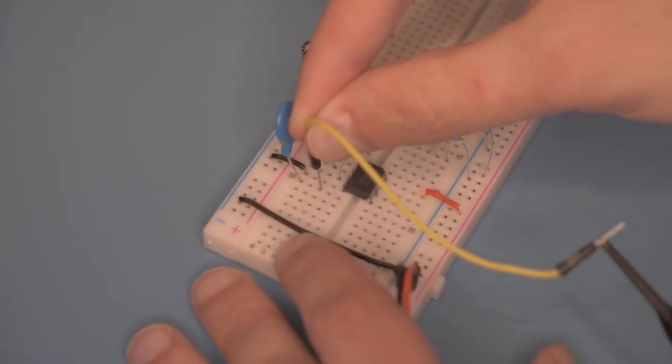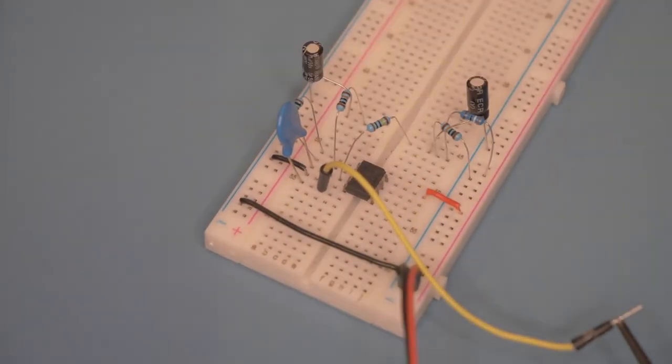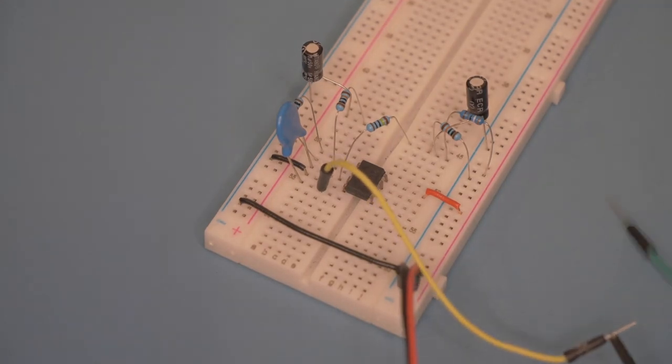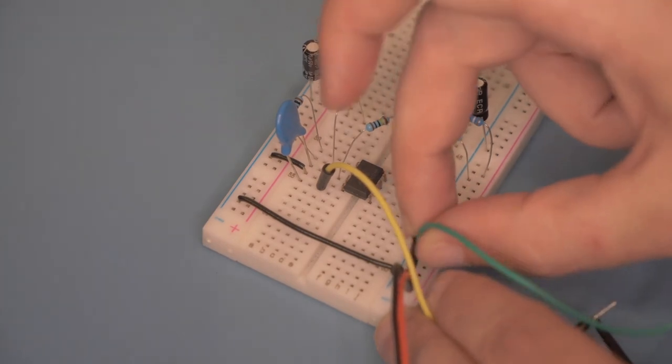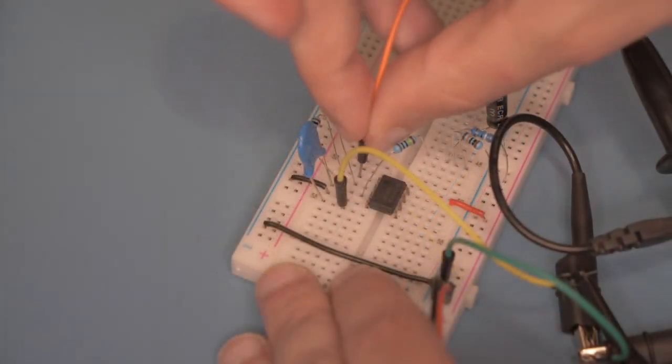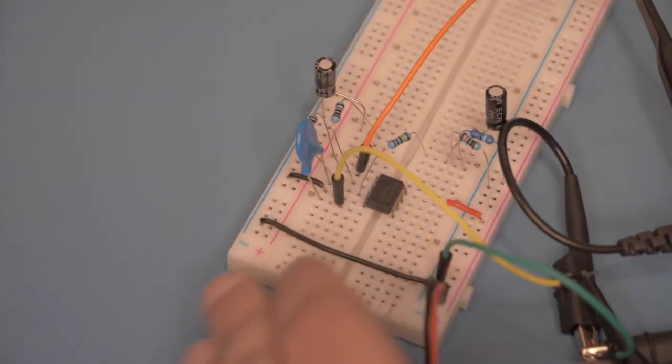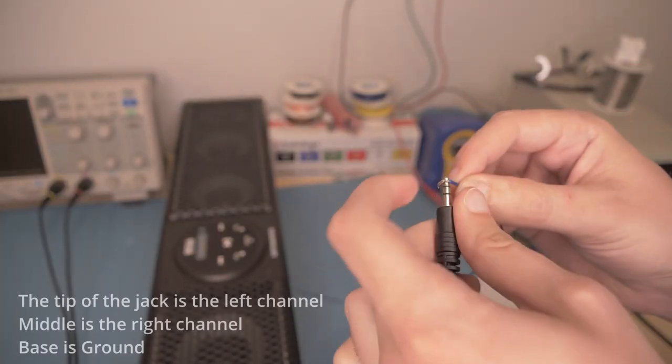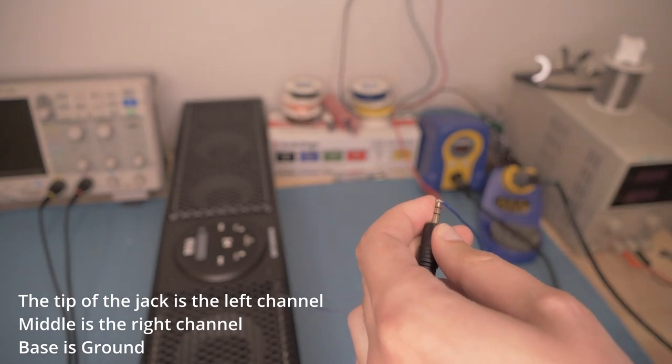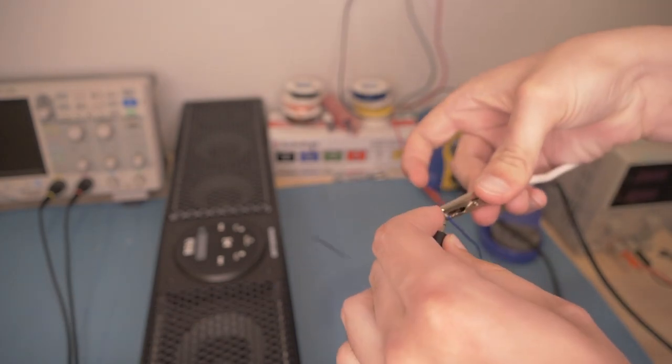I'll connect the first channel of my oscilloscope in line with the raw RCA output coming from the soundbar, before the input capacitor. I'm then going to insert the ground wires and connect the second channel to the output of the op amp. For the RCA connection, I'm going to wrap this stranded wire around the left channel portion of the 3.5mm audio jack, and hold it in place with this alligator clip.